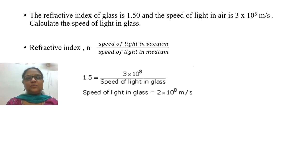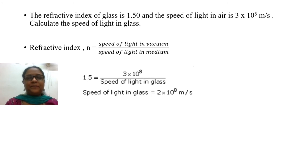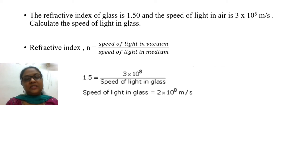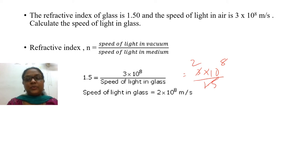The refractive index of glass is 1.5 and the speed of light in air is 3 × 10⁸ m/s. Calculate the speed of light in glass. We know the formula: n = speed of light in vacuum divided by speed of light in the medium. So 1.5 = (3 × 10⁸) / speed of light in glass. Cross multiplying, speed of light in glass = (3 × 10⁸) / 1.5 = 2 × 10⁸ m/s.